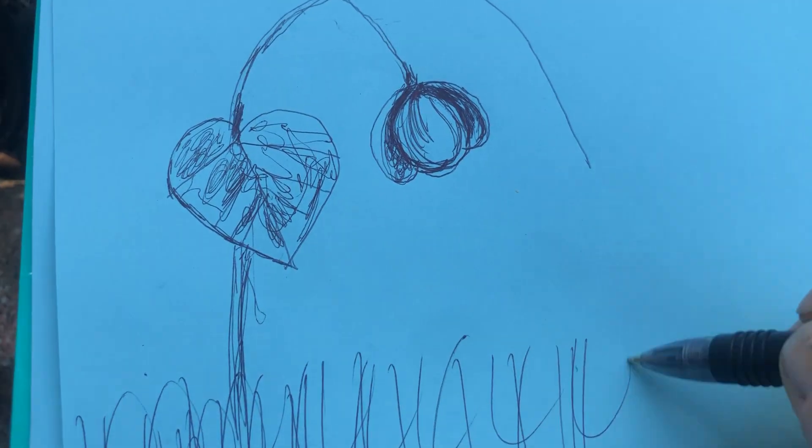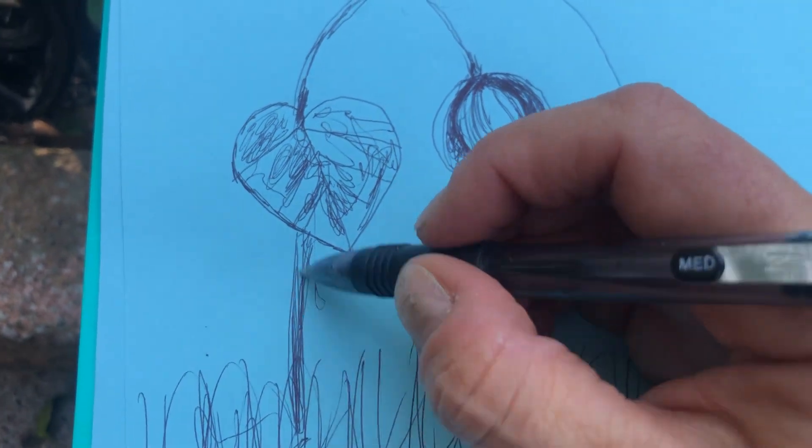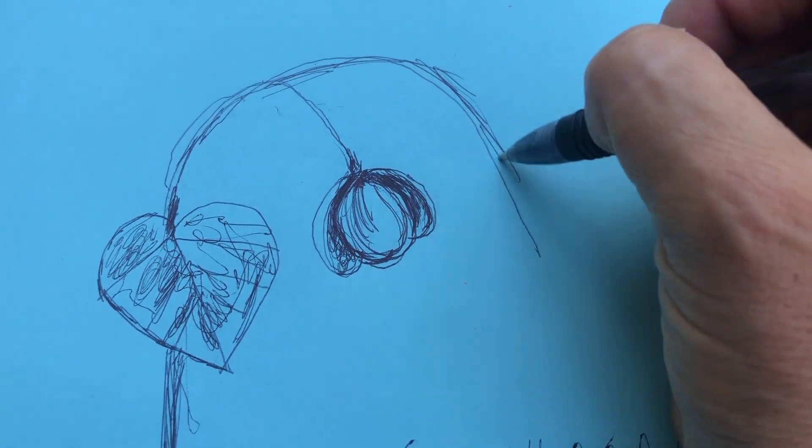Now we're going to use wax resist if you want to paint this. And we'll do that with crayon, the green. And then when we paint over it with watercolor, it will resist.